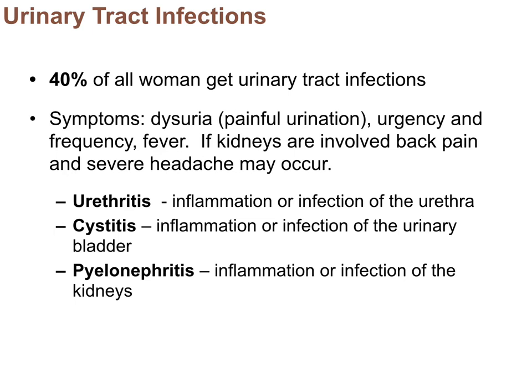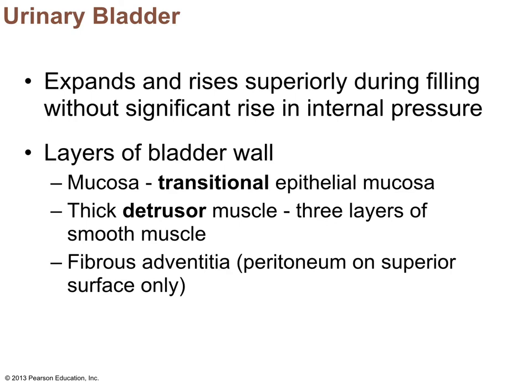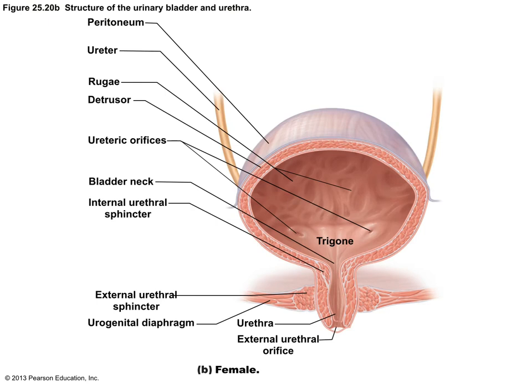The trigone is the triangular area in the bladder outlining the openings of the two ureters and the opening of the urethra — it's also the area where infections tend to persist. Inside the urinary bladder is a transitional epithelium with dome-shaped cells that distend and stretch. There's also the detrusor muscle — a smooth (involuntary) muscle that contracts to expel urine. The internal and external urethral sphincters are visible on this diagram.